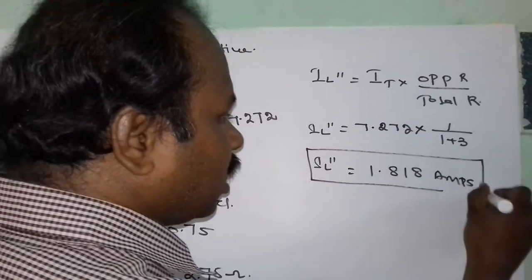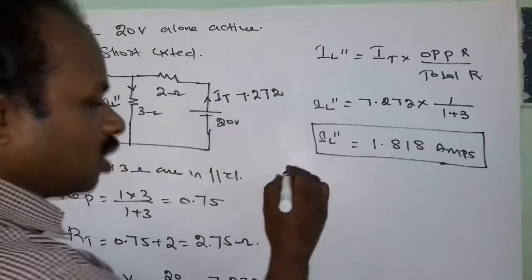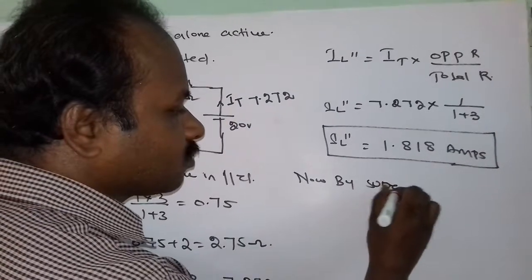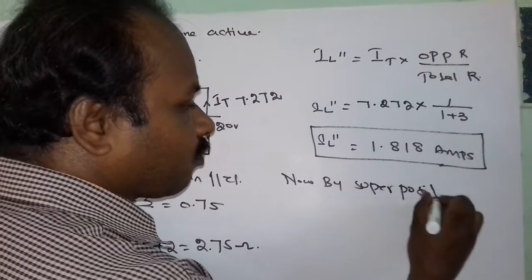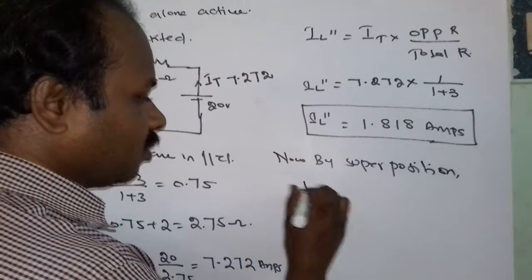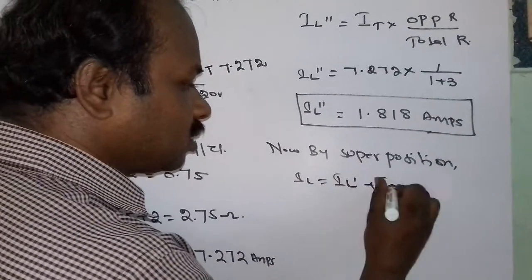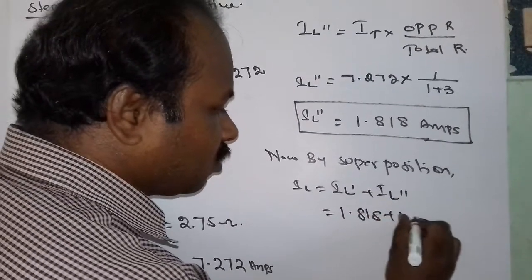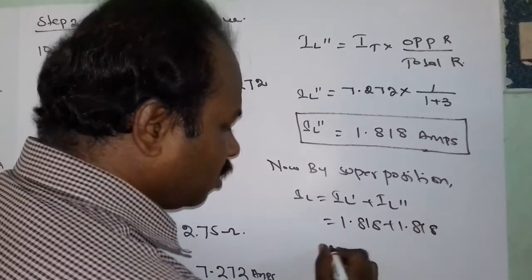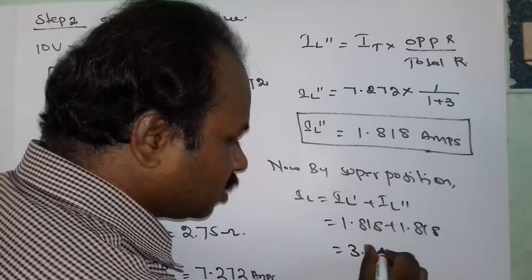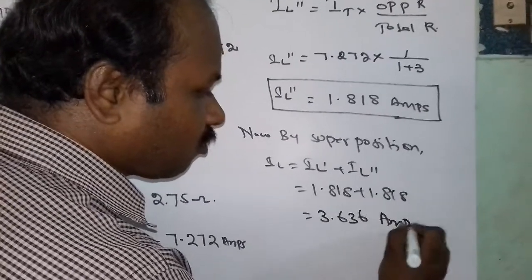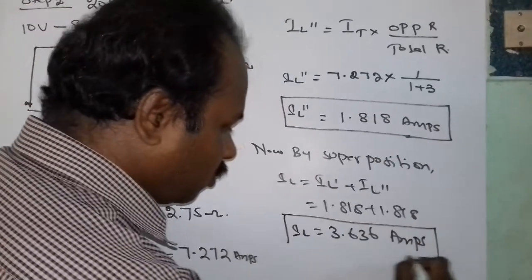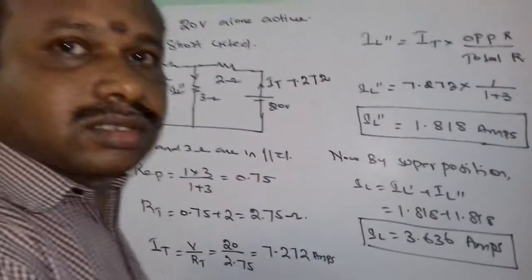This is the current due to the second source, that is the 20V source alone. By superposition, IL equals IL dash plus IL double dash, equal to 1.818 + 1.818, equal to 3.63 amps. This is the value of the current that flows through the load resistance. Thank you.